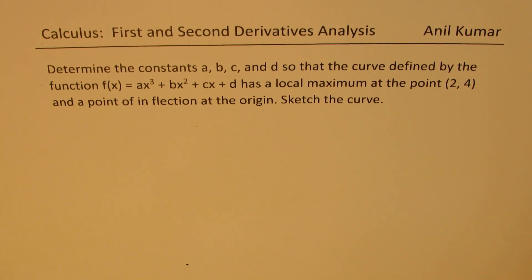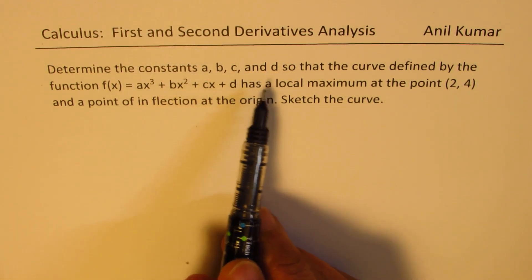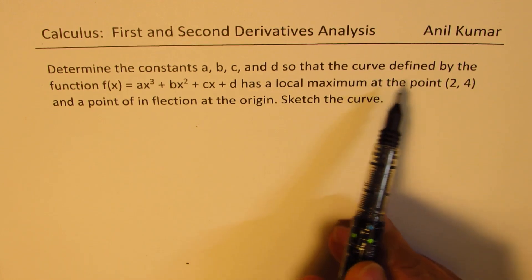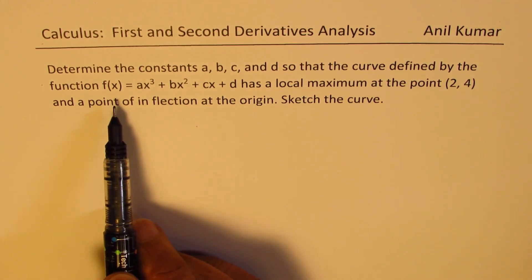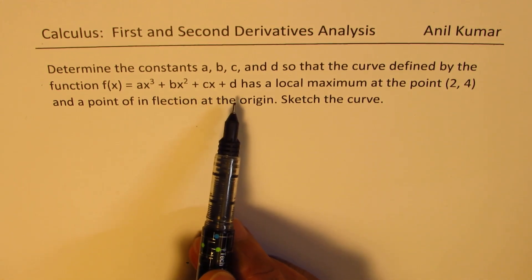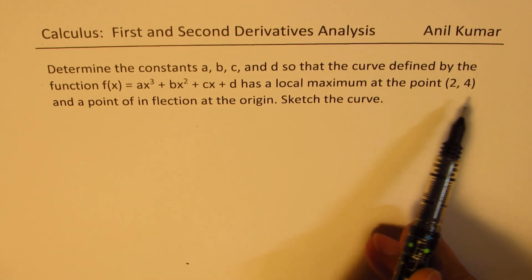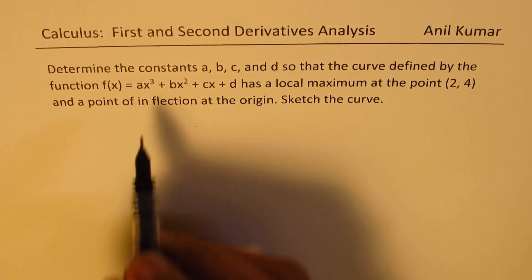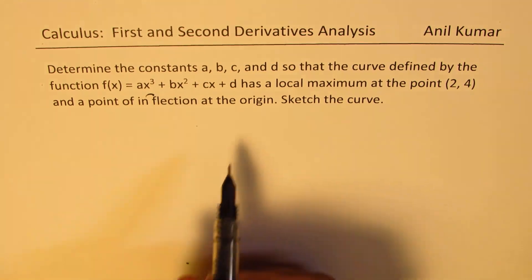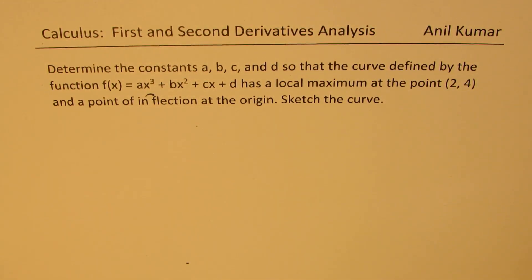The question here is: determine the constants a, b, c and d so that the curve defined by the function f(x) = ax³ + bx² + cx + d has a local maximum at the point (2, 4) and a point of inflection at the origin. Sketch the curve. You can always pause the video, answer the question and then look into my suggestions.